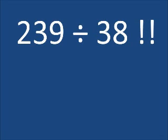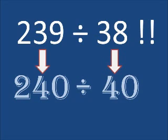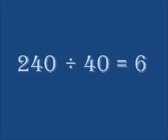We round 239 up to 240, and we round 38 up to 40. Now we can have a lot better success at making an estimate. 240 divided by 40, 24 divided by 4 gives us 6.